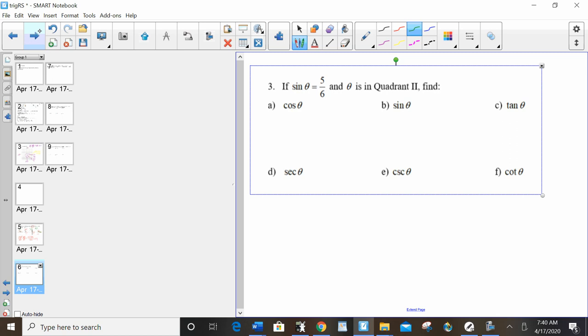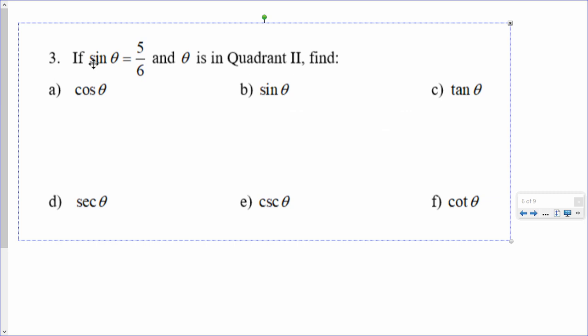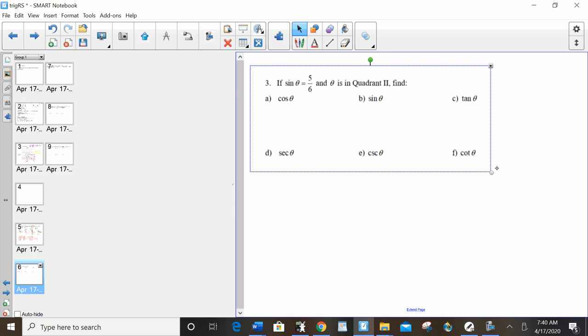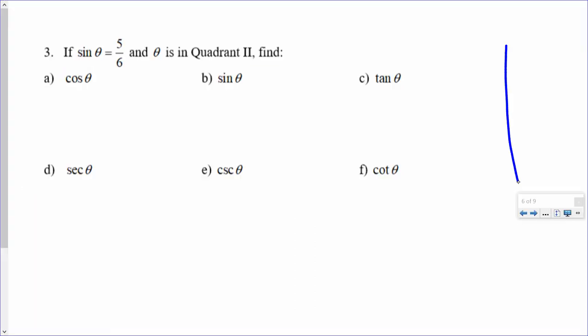All right, I see sine of theta equals 5 over 6. Whenever I see sine, cosine, or tangent equals something over something, I'm going to make my triangle and follow my procedure. So it's in quadrant 2. It says it's in quadrant 2, so I'm going to draw my angle at the quadrant 2. I go down to the x-axis.